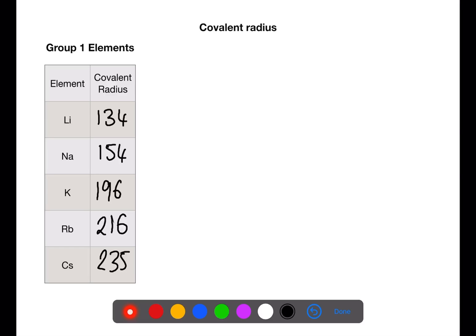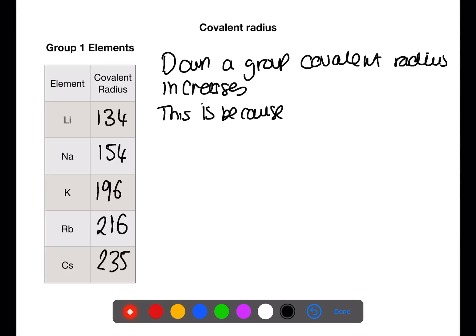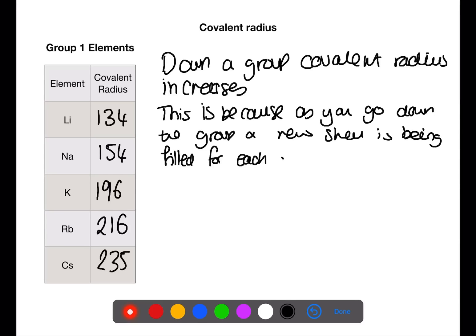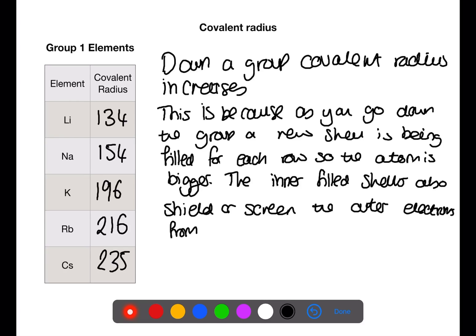What is the general trend here? Down a group, covalent radius increases. This is because as you go down the group, a new shell is being filled for each row. So the atom is bigger. The inner filled shells also shield or screen the outer electrons from increased nuclear charge.